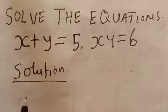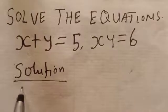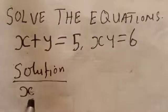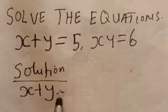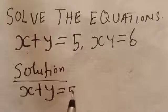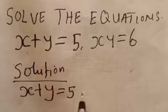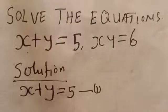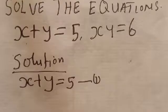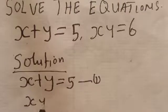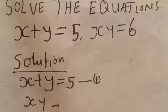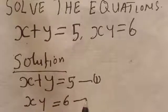Let's start with the solution. Equation one is x plus y equal to 5 — let's call this equation one. The second equation is x times y equal to 6 — this is equation two.